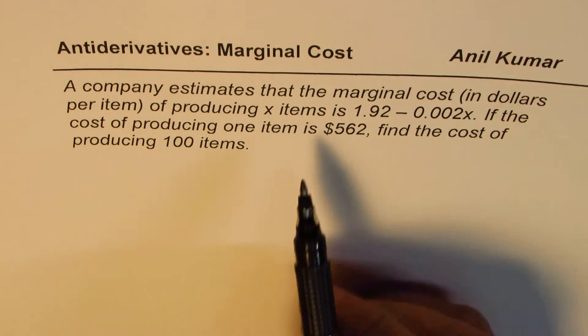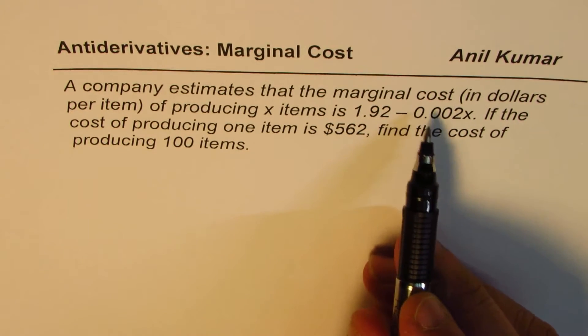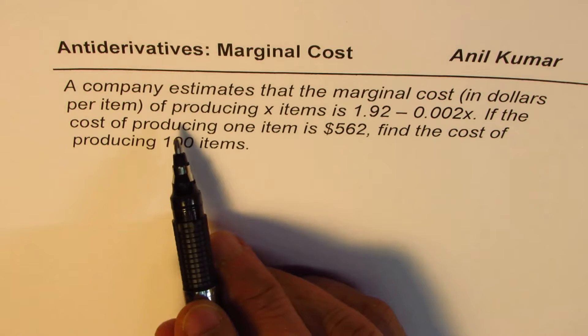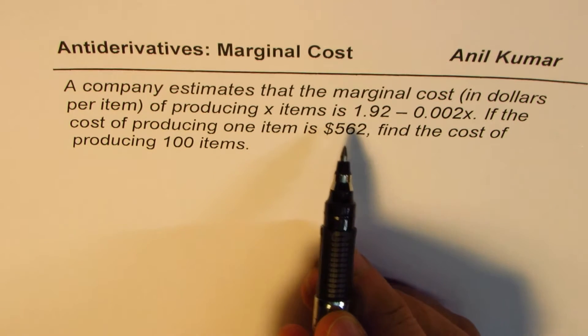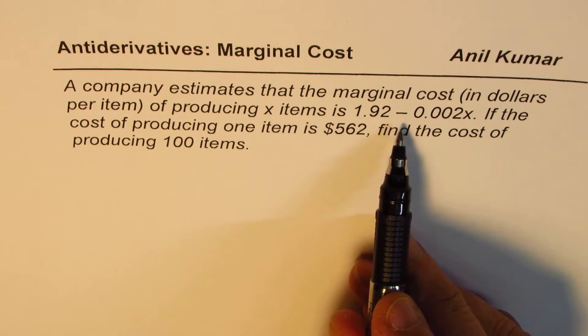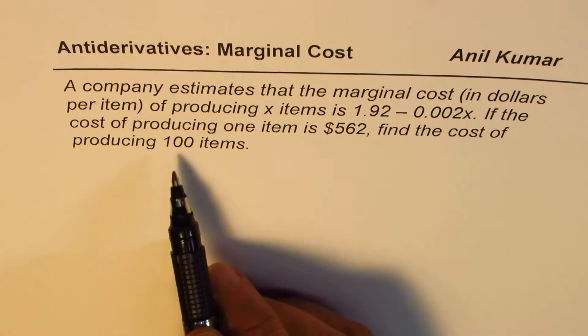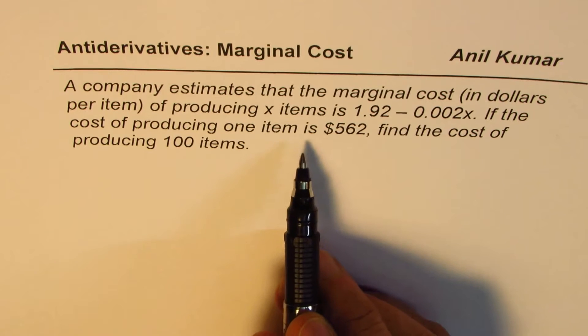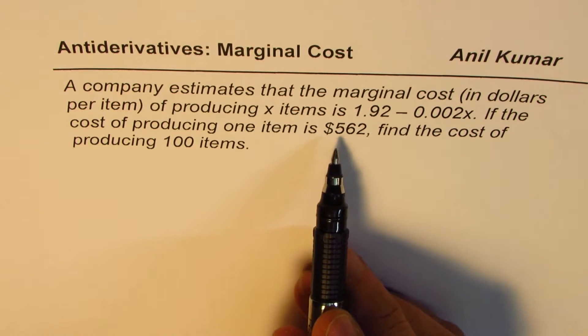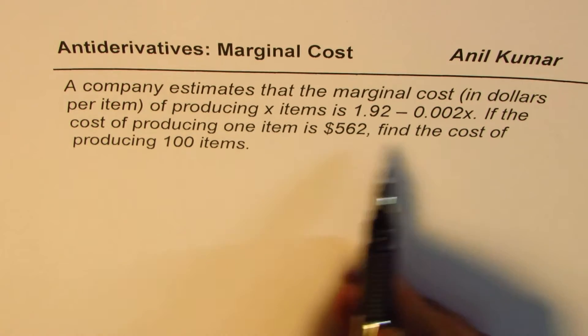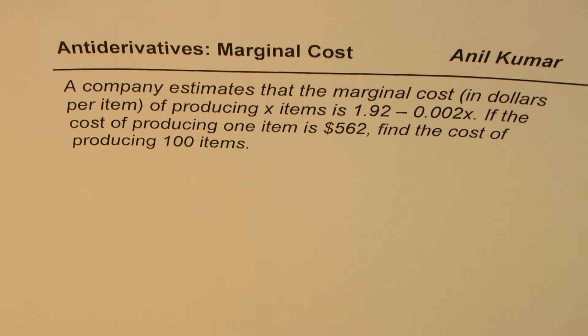A company estimates that the marginal cost in dollars per item of producing x items is 1.92 minus 0.002x. If the cost of producing one item is $562, find the cost of producing 100 items.